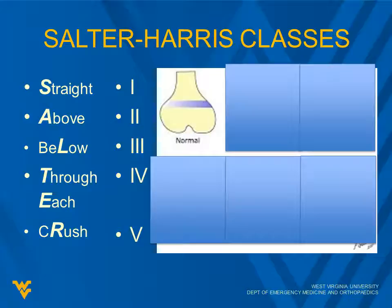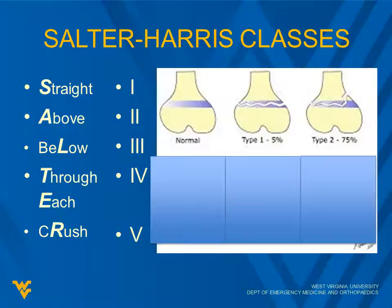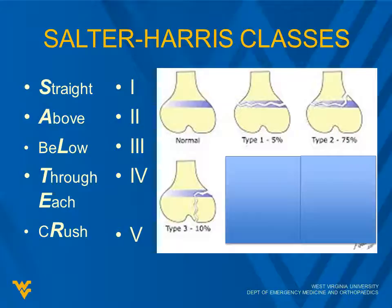Here are the Salter-Harris classifications with a mnemonic. Straight through the physis would be a Salter-Harris 1 — that's about 5% of Salter-Harris fractures. It can be extremely difficult to see on x-ray if you see it at all. Type 2 is above the fracture line. For this nomenclature, you have to picture the bone in a specific orientation — you would effectively be flipping the person on their head. Salter-Harris 2 extends through the physis and into the metaphysis — that's the majority of Salter-Harris fractures, at 75%.